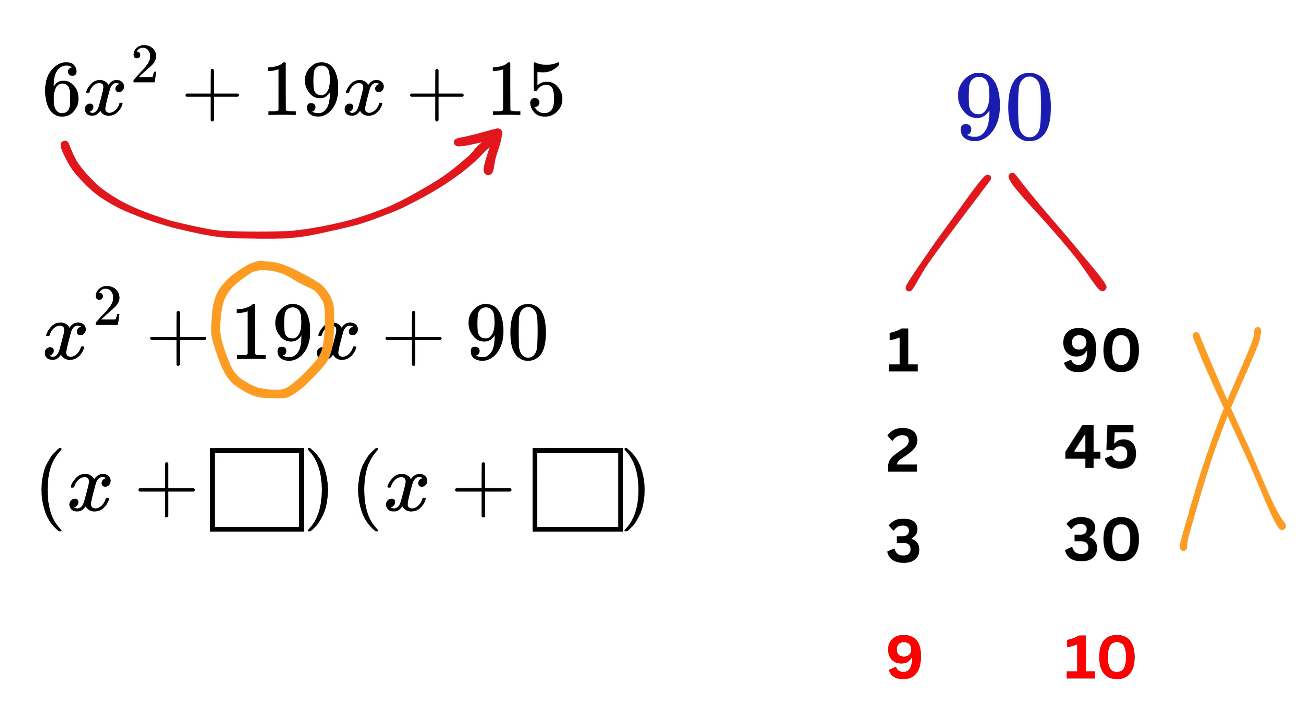But when you reach 9 and 10, we have 9 times 10 equals 90, and 9 plus 10 gives 19. Whoa, this is a perfect match. So just write 9 here and 10 here.